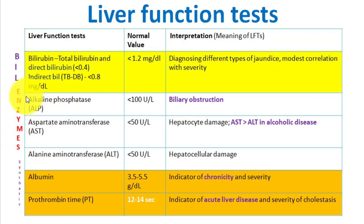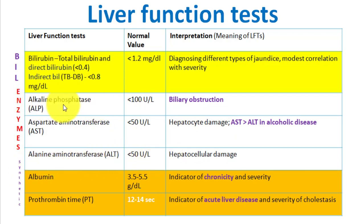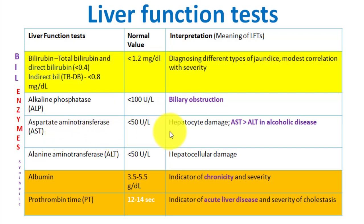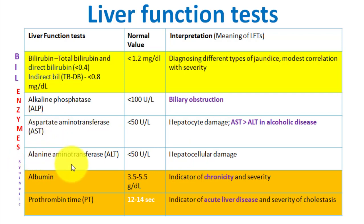Now let's come to the enzyme tests. Each enzyme has a specific meaning. Aspartate transaminase (AST), also called SGOT, and ALT, also called SGPT, both indicate hepatocellular damage. Alkaline phosphatase (ALP) indicates biliary obstruction — so whenever ALP is high, that suggests biliary obstruction. The normal values are: ALT and AST less than 50, and alkaline phosphatase less than 100.